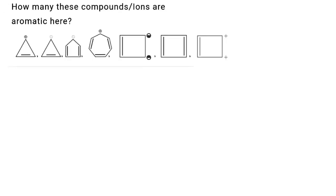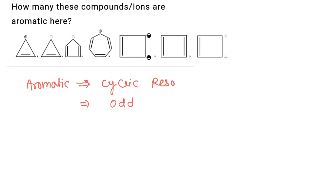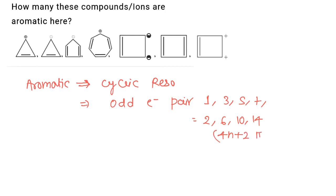How many of these compounds or ions are aromatic? For any compound to be aromatic, it must have cyclic resonance, and it must have an odd number of electron pairs — meaning 1, 3, 5, or 7 pairs — or equivalently 2, 6, 10, or 14 pi electrons. It must follow the 4n+2 pi electron rule.